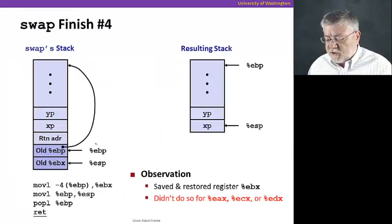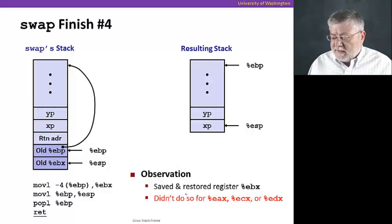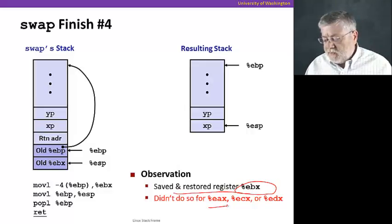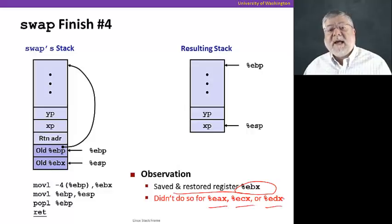The last observation to make is that although we saved and restored the register EBX, we didn't bother to do that for EAX, ECX, or EDX. We just didn't bother saving those at all. And why not? We used those registers as well in the code, turns out. Well, the reason we didn't save them is because our convention is that the caller needs to save those registers. We're going to talk more about this in the next section.